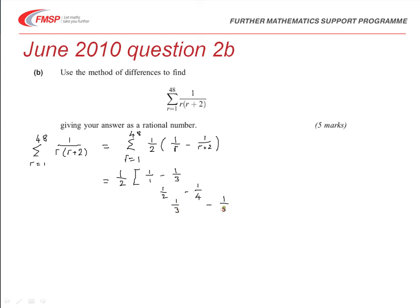And when I put r as 4 in, I'm going to get 1 quarter, and minus 1 sixth.